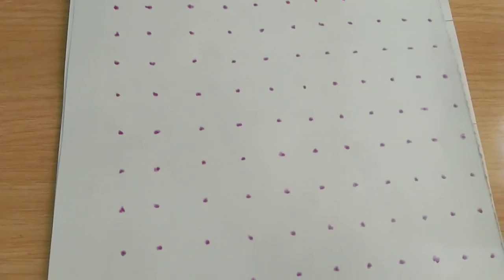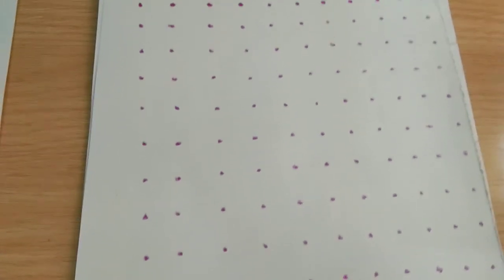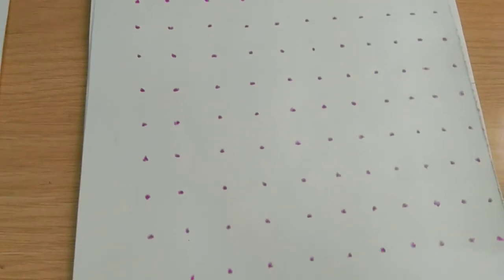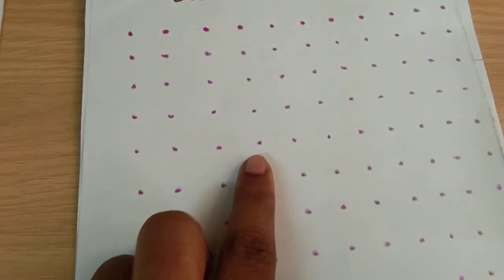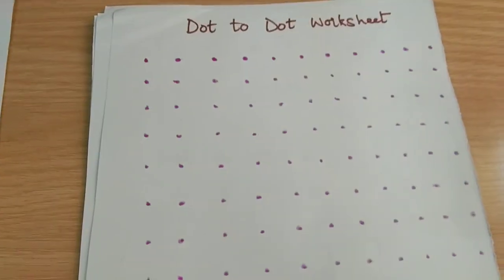This game starts with an empty grid of dots. Two players take turns adding a single horizontal or vertical line between two unjoined adjacent dots, and then a player who completes the fourth side is going to earn one point. No need to explain about this game, everybody knows it. I'm just introducing it to my son now.